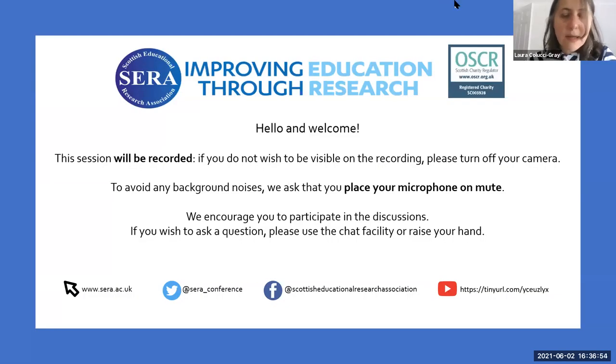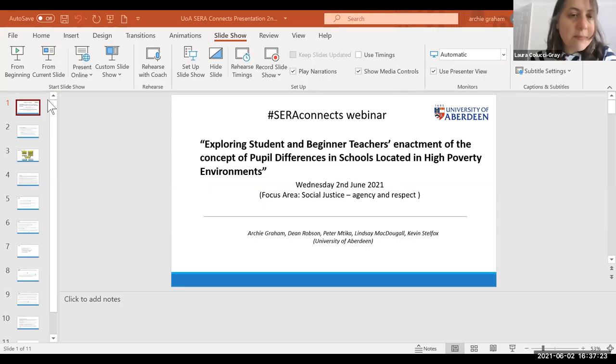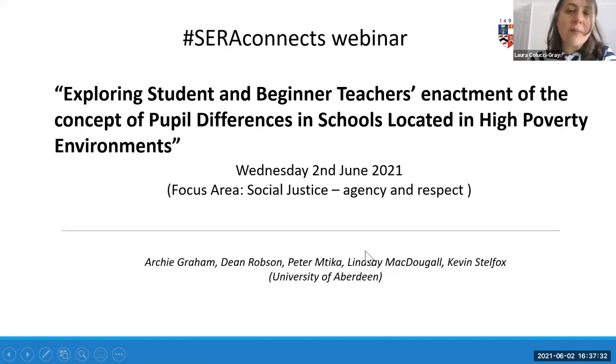Welcome from the University of Edinburgh. Today we'll be sharing papers and offering provocations after each, hoping for well-rounded discussions around the theme of social justice in relation to the attainment challenge project. The first speaker is Archie Graham from the School of Education, University of Aberdeen. The title of the paper is 'Exploring Student and Beginning Teachers' Enactment of the Concept of Pupil Differences in Schools Located in High Poverty Environments.' Archie will be speaking for about 15 minutes.